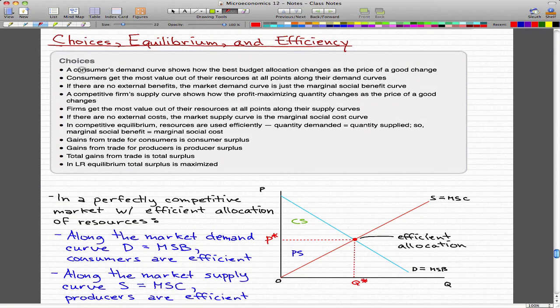Choices, equilibrium, and efficiency. A consumer's demand curve shows how the best budget allocation changes as the price of the good changes. Consumers get the most value out of their resources at all points along their demand curves. If there are no external benefits, the market demand curve is the marginal social benefit curve.